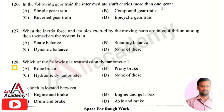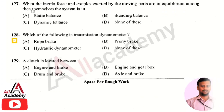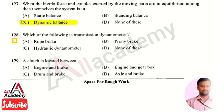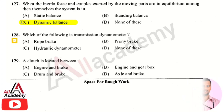In a compound gear train, the intermediate shaft carries more than one gear. When the inertia force and couples exerted by the moving parts are in equilibrium among themselves, the system is in dynamic balancing. Such systems are called dynamically balanced systems.